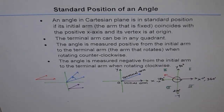Standard position has two important conditions: first, the vertex must be at the origin; and second, the initial arm must lie along the positive x-axis.